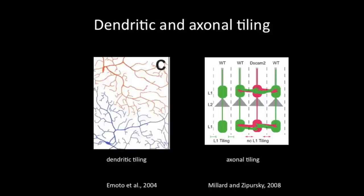While the molecular mechanisms for dendritic tiling remain elusive, at least one such mechanism has been shown to mediate axonal tiling, a similar phenomenon shown on the right. The medulla region of the fly visual system exhibits both columnar and laminar organization. The axons from L1 and L2 cells make synaptic connections at specific layers within each column but do not form connections with target cells in the neighboring columns. Tiling of the L1 neurons requires DSCAM2, a homotypic repulsive molecule. Single mutant L1 axons generated using the Mosaic technique target to the correct layer within the appropriate column, but then extend laterally and invade the L1 layers of the neighboring columns.